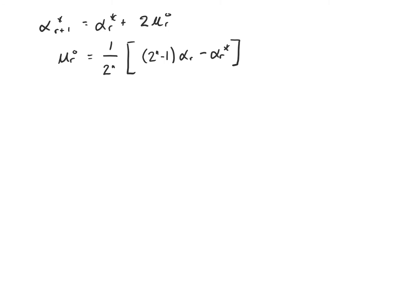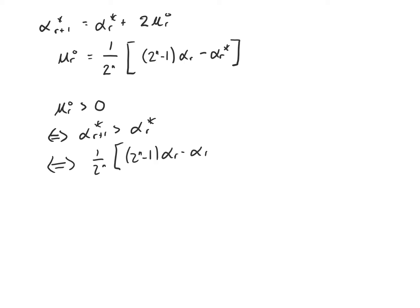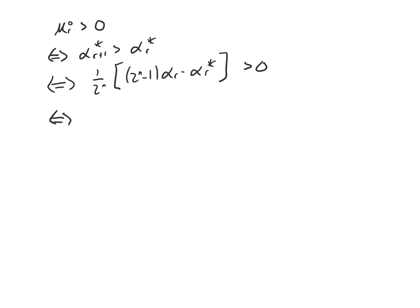So we see that so long as mu sub r is positive, the coefficient alpha star increases with each iteration of the subroutine by an amount 2 mu. Alpha sub r+1 star is going to be greater than alpha sub r star provided that mu sub r is positive. Mu sub r being positive is the same condition as 1 over 2^n times (2^n minus 1) times alpha sub r minus alpha sub r star being positive, which holds whenever alpha sub r star is less than 2^n minus 1 times alpha sub r — which is true when both quantities are positive.